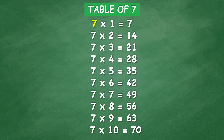Table of 7: 7 times 1 equal 7, 7 times 2 equal 14, 7 times 3 equal 21, 7 times 4 equal 28, 7 times 5 equal 35.